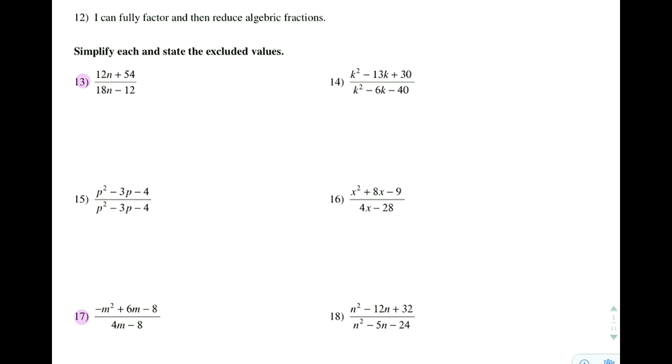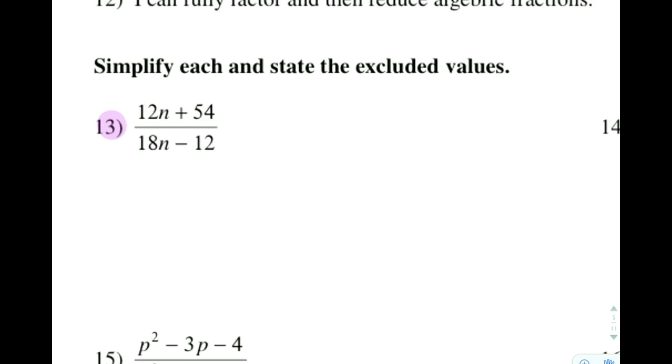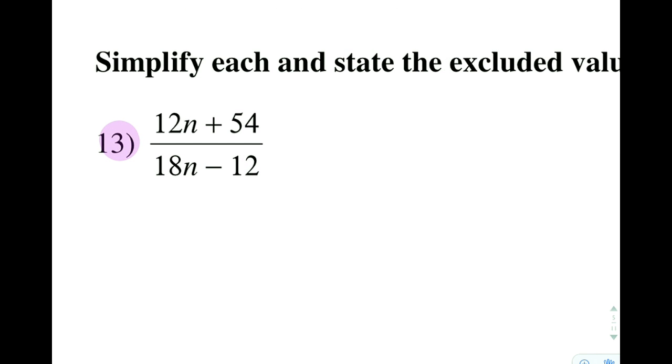Starting with this first example, what you want to do is look for what is in common with everything across your top. I know that 12 does not go into 54, so it is not 12, but 6 is going to go into 54. That's going to leave me with 2n, and 54 divided by 6 is 9, so 2n plus 9.